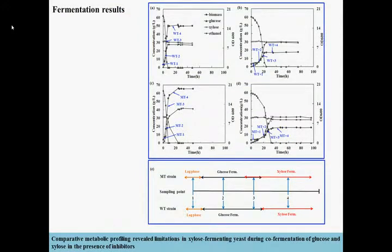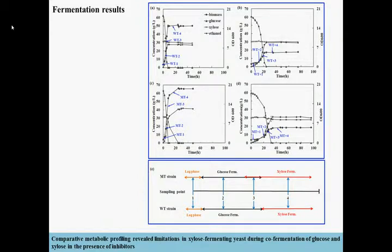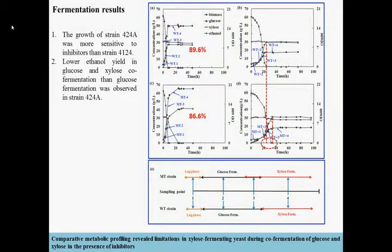As shown in the figure, according to the sugar-consumed portion, the fermentation was divided into four stages, and samples were taken respectively. From the fermentation results, it was found that the growth of strain 2-4A was more sensitive to inhibitors. In addition, xylose and glucose fermentation was also affected in strain 2-4A.